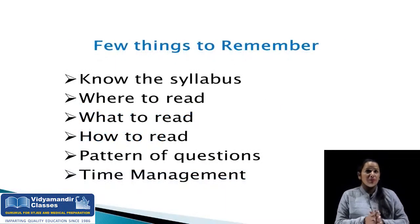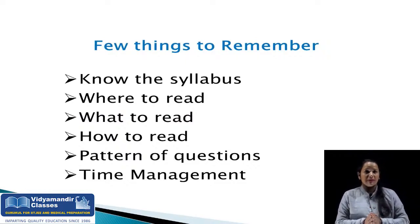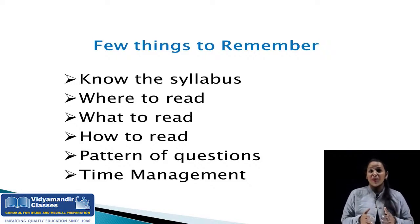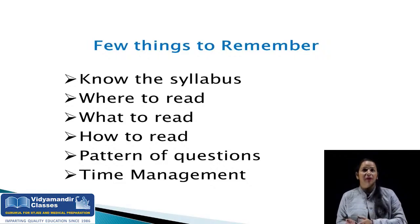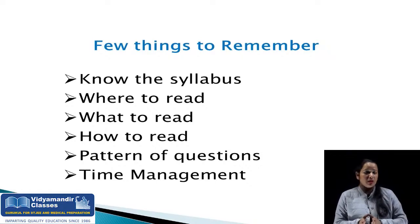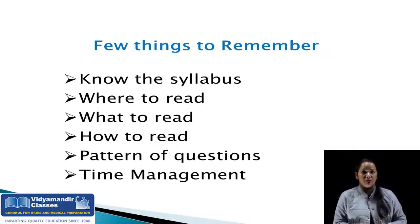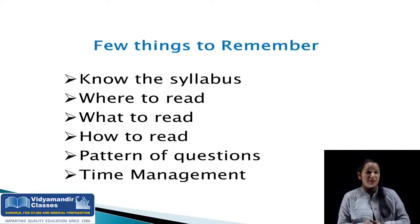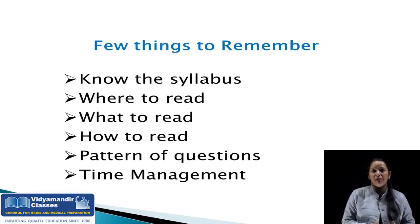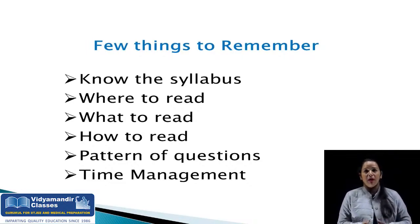Few things you have to remember. First, you should know the syllabus. You have biology — there is a biology section with botany and zoology. You have to divide chapters: these chapters are in botany and these chapters are in zoology. You need to know the syllabus — what to learn, where to read, which chapters to learn, when to learn, how to read — pattern of the questions and time management.